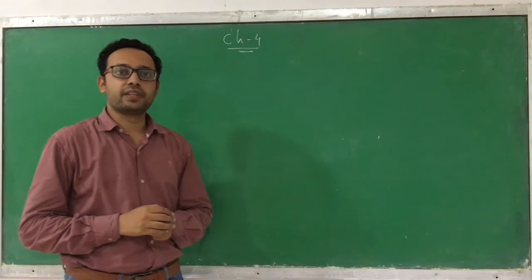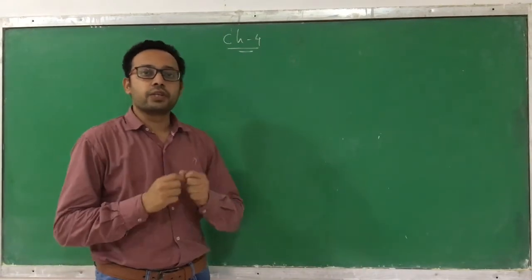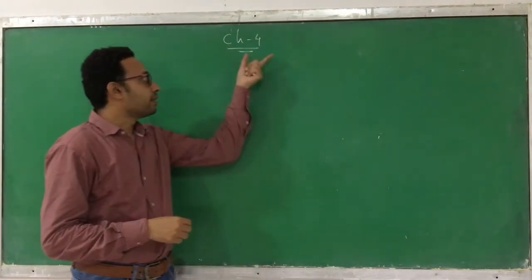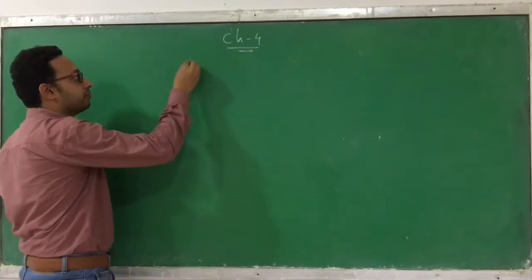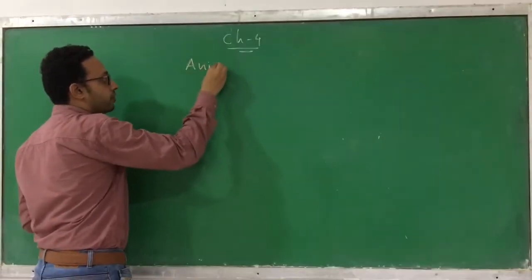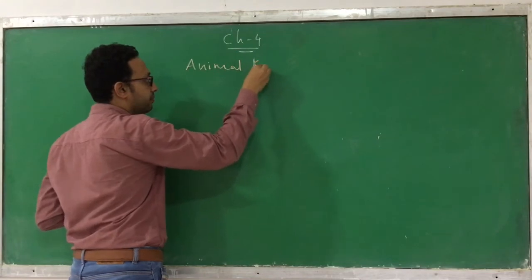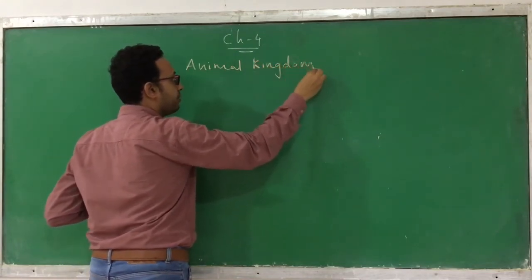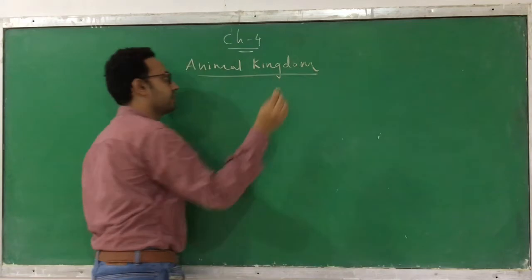Welcome back dear students and friends. Today we are going to start with a new chapter — Chapter number 4. It is called Animal Kingdom. We have already finished with the Plant Kingdom, and now we are going to start with Chapter number 4, Animal Kingdom.